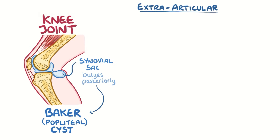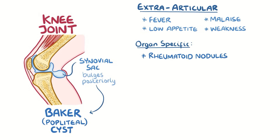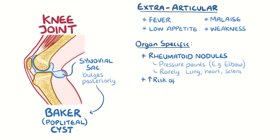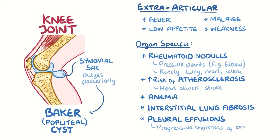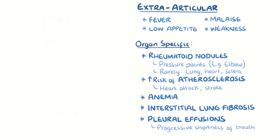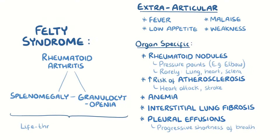Extra-articular manifestations include non-specific symptoms of inflammation such as fever, low appetite, and malaise or muscle weakness. Organ-specific manifestations include rheumatoid nodules, or firm bumps of tissue, most commonly found in the skin around pressure points such as the elbows, and more rarely in the lungs, the heart, or the sclera of the eye. There's also an increased risk of atherosclerosis, and therefore heart attack or stroke, as well as anemia, interstitial lung fibrosis and pleural effusions, which can present as progressive shortness of breath. One particularly serious associated condition is Felty syndrome — a triad of rheumatoid arthritis, splenomegaly and granulocytopenia — which can lead to life-threatening infections.